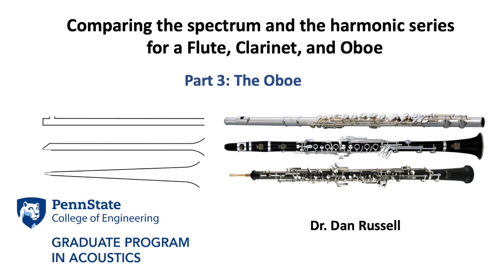Comparing the spectrum in the harmonic series for a flute, clarinet, and oboe. A flute, clarinet, and oboe are almost the same length, but the flute is an open-open cylinder, a clarinet is a closed-open cylinder, and an oboe is a closed-open cone. In this segment, part three, we'll explore the frequency spectrum and the harmonic series for an oboe.